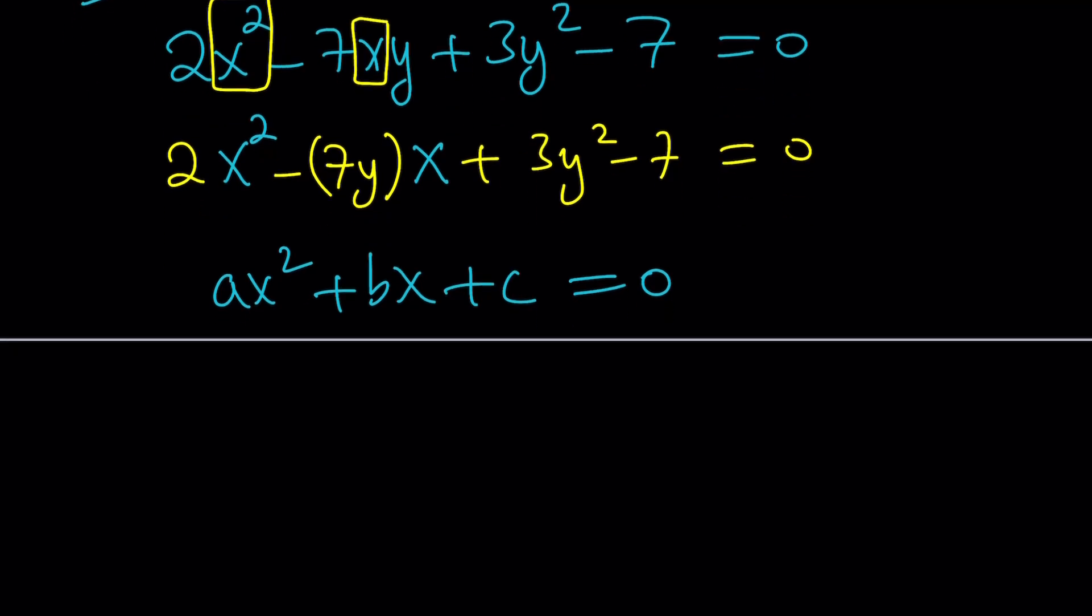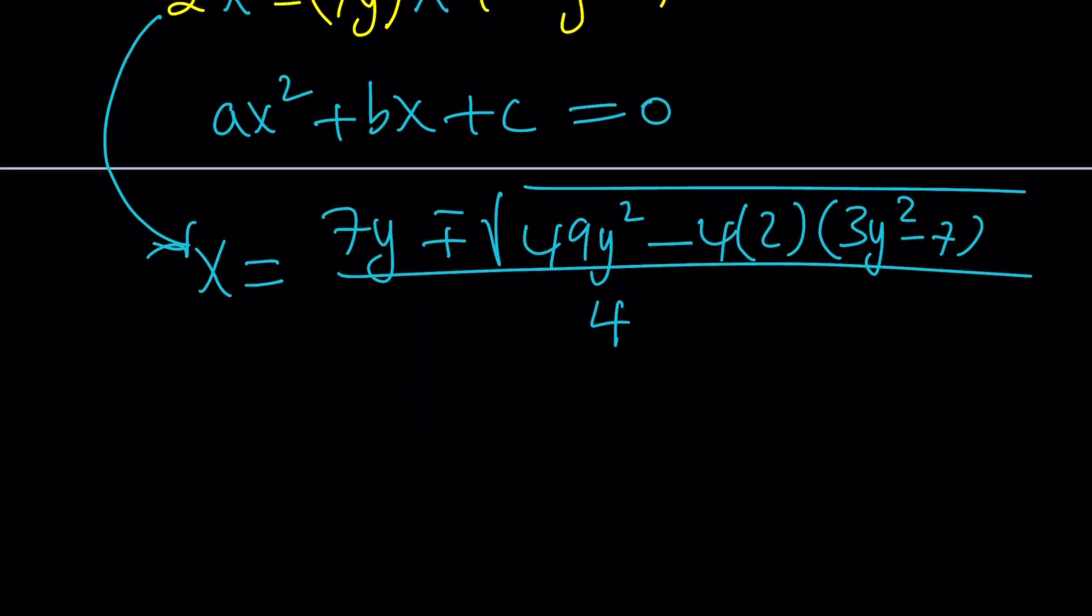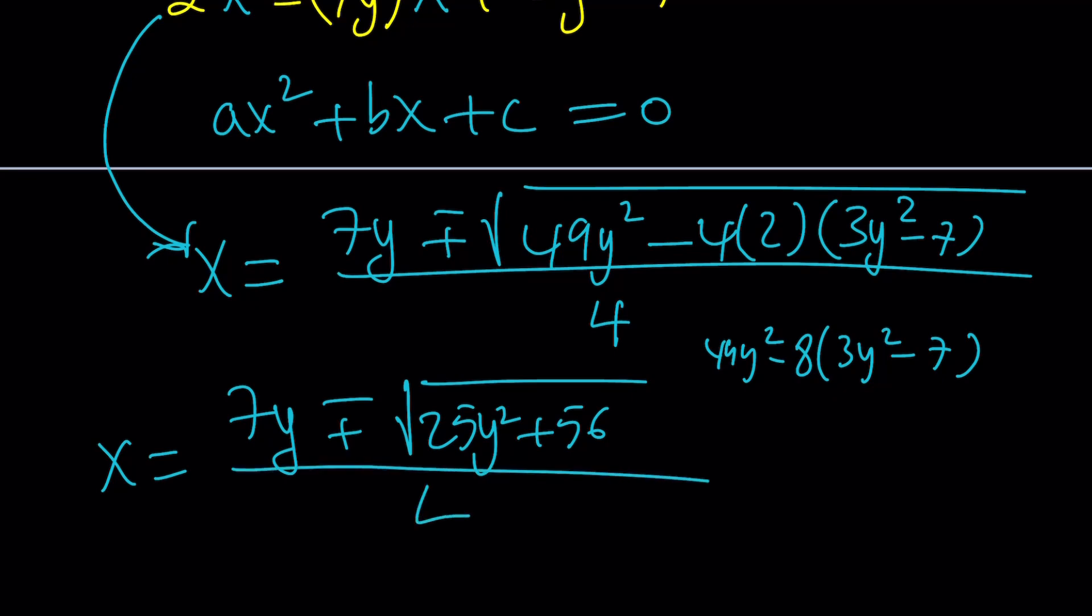So I'm going to use the quadratic formula to solve for x. That's going to give me negative b plus minus the square root of b² - 4ac. That's the quadratic formula all over 2a, which is 4. Now let's go ahead and simplify underneath the radical. That's the discriminant. 49y², so this is going to be negative 8 multiplied by this. And then we have the 49y².